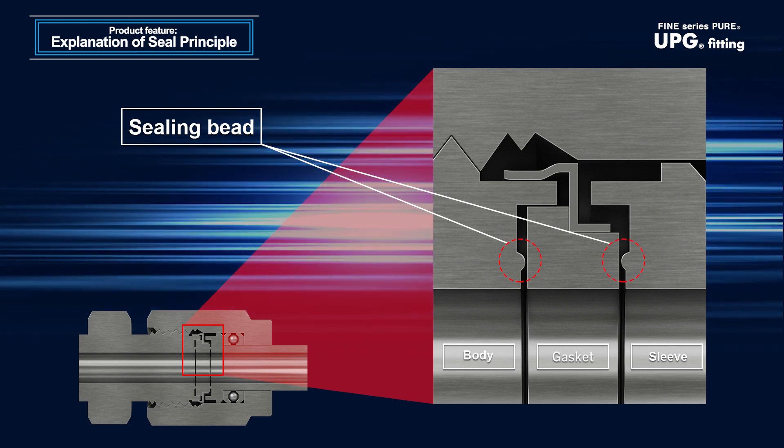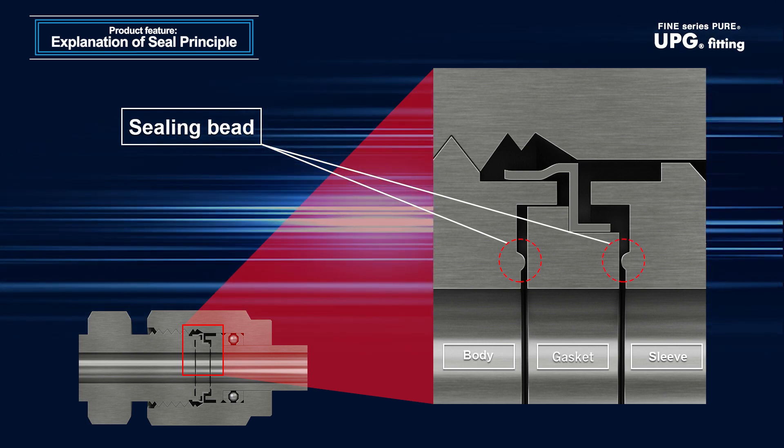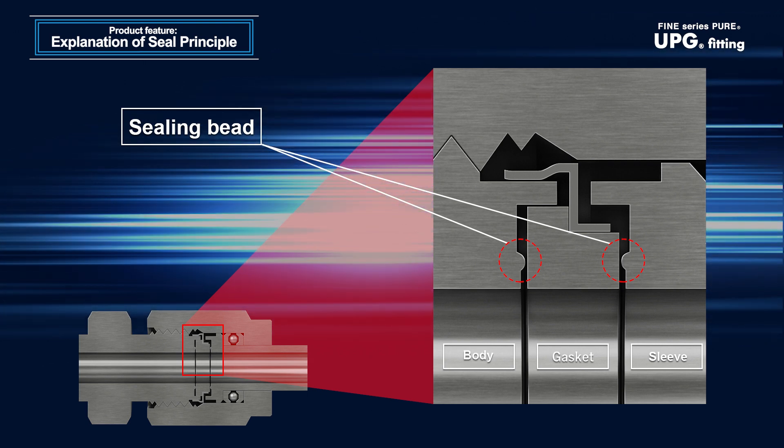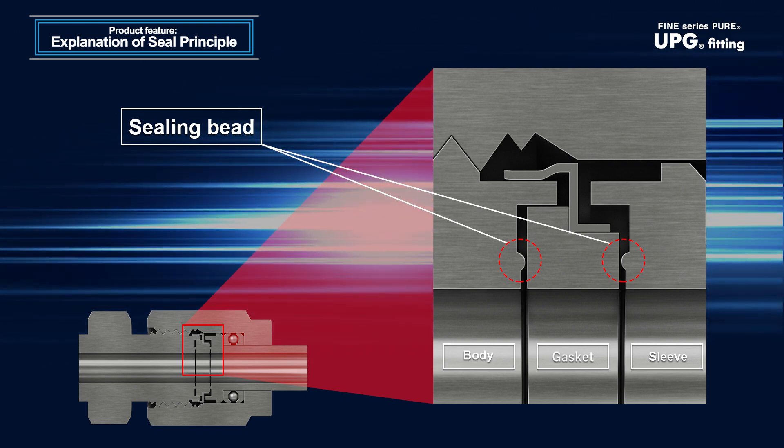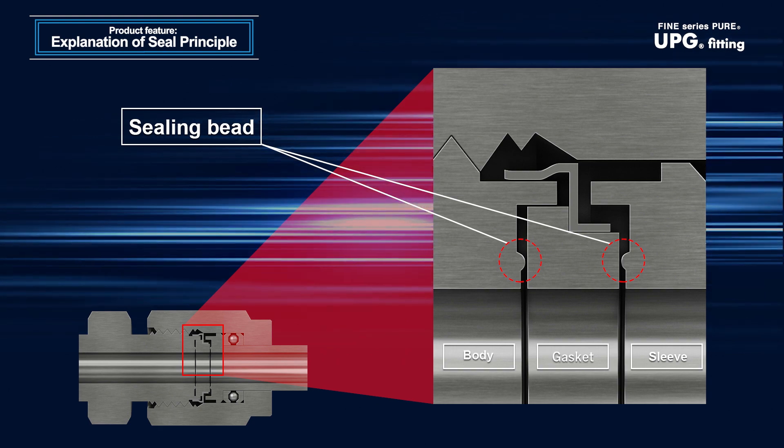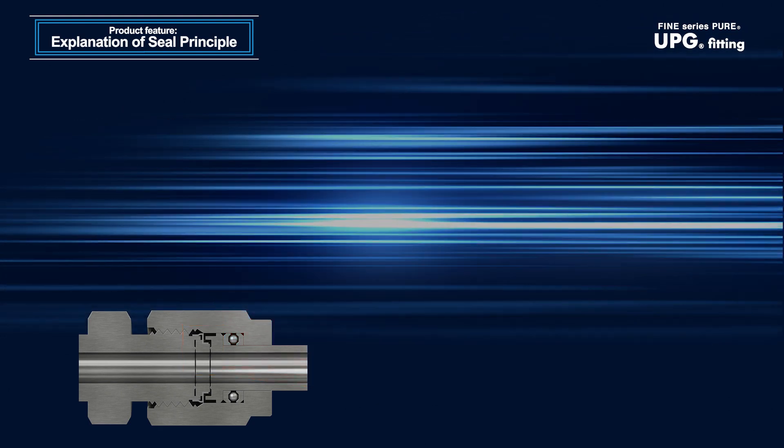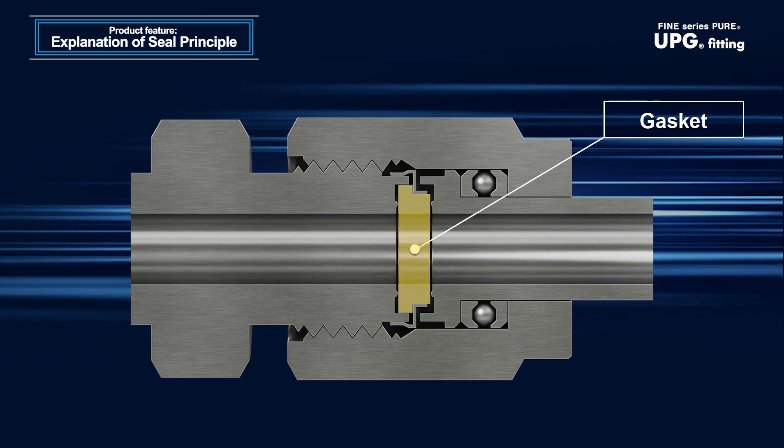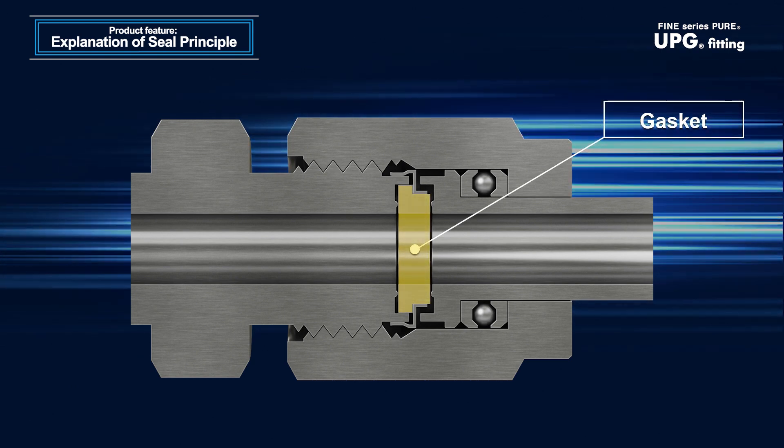The rounded parts of the body and the sleeve, and the contact surface with the gasket inside from the rounded parts, are elaborate and super-finished. Despite being of a metal type, high gas tightness can be maintained. A flat plate gasket is adopted and its surfaces are super-finished.